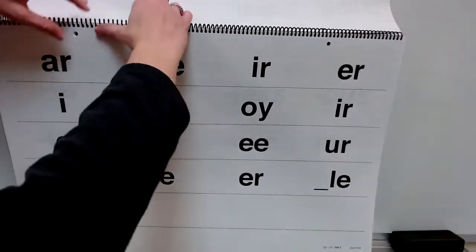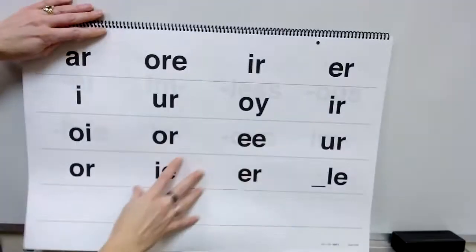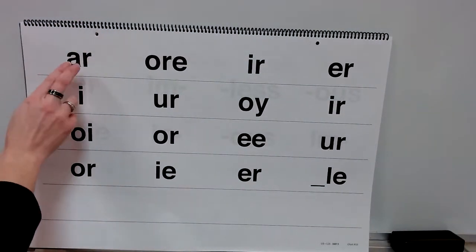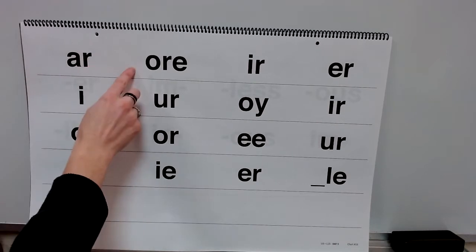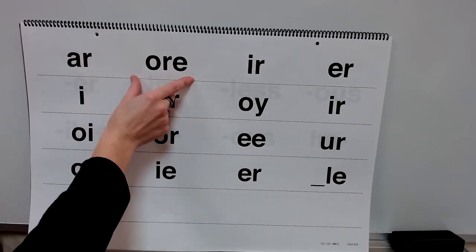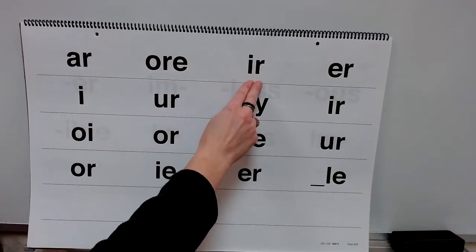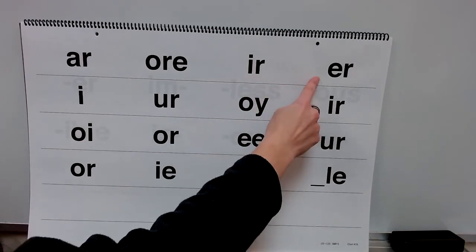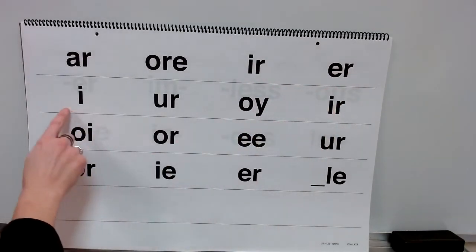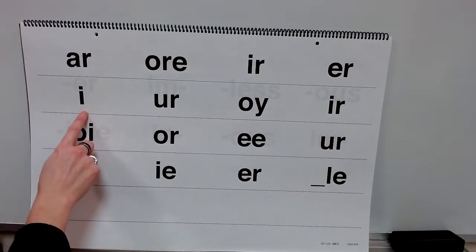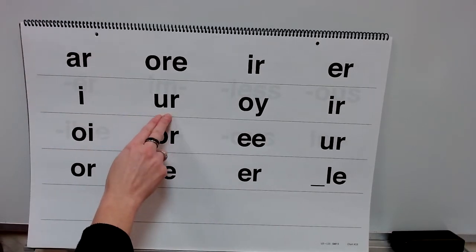Now you'll practice saying some sounds or some spellings. Get ready. Sound: are. Yes. Sound: or. Yes. Sound: er. Yes. Sound: er. Yes. Sound: i. Yes.